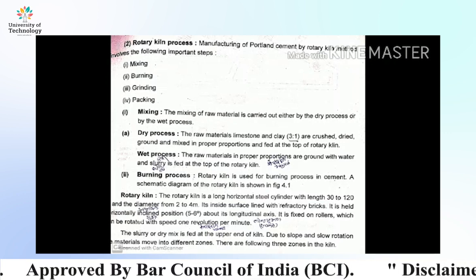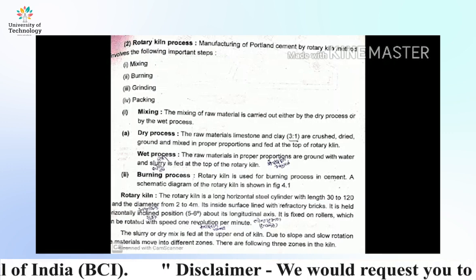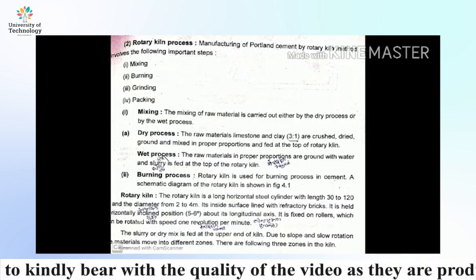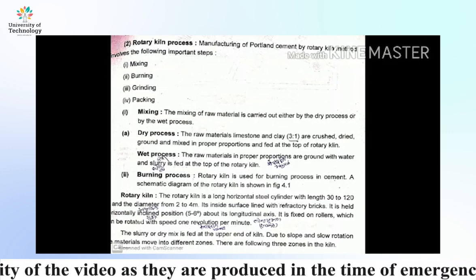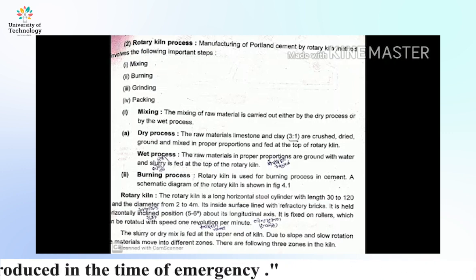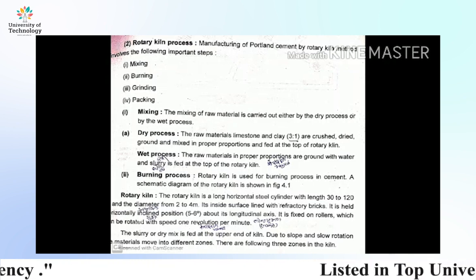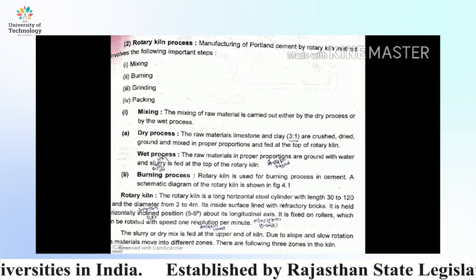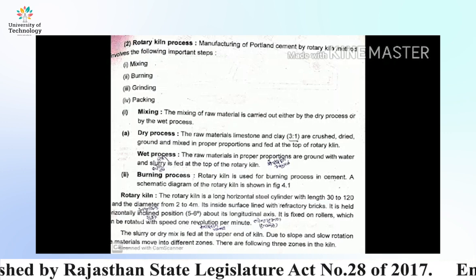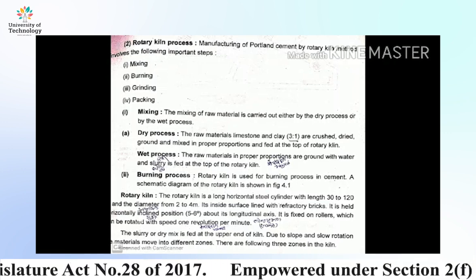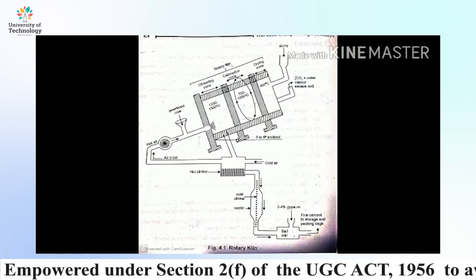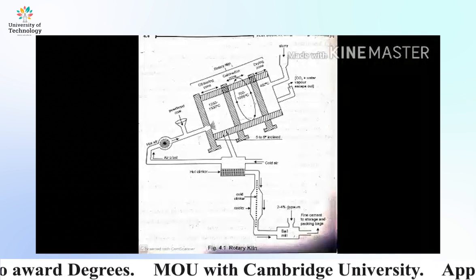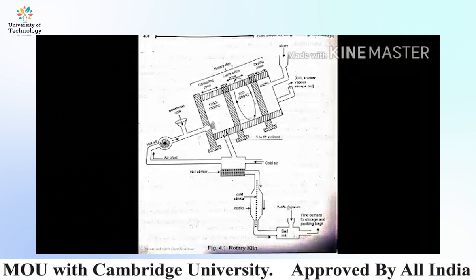There are three zones in the rotary kiln. The burning process occurs across these zones. First is the drying zone, which is the upper part of the rotary kiln where the temperature range is around 100 to 400 degrees centigrade and most of the water gets evaporated. Second is the calcination zone, which is the middle part of the kiln.